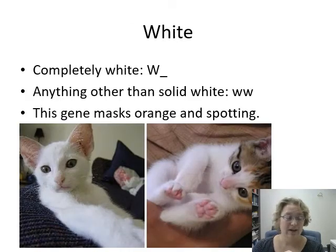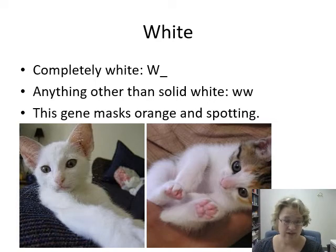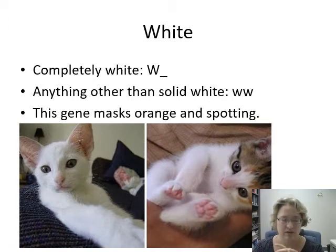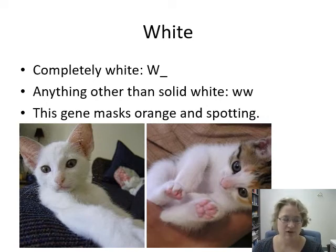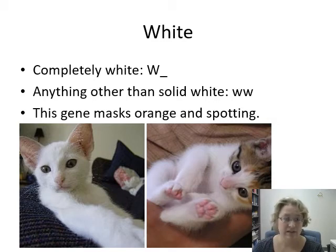Next we have white. If the cat is completely white, this is like the albino gene — it's actually a dominant trait, written as a capital W, and we don't know what the other allele is. Anything other than solid white is two little w's, the recessive trait. This all-white gene masks orange and spotting completely, so you would put a question mark for both of those since you don't know what they are.